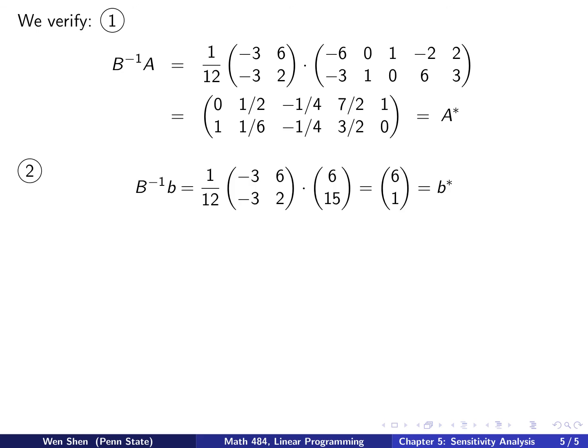Now let's check the second claim: B inverse times the b vector. This is B inverse and that's the b vector. It's a 2 by 2 matrix times a vector, divided by 12. I have 3 times 6 minus 18, 6 times 15 is 90, divide by 12 and you get 6. For the second one, you get 12 over 12 which is 1. You compare that, and it's exactly b star.